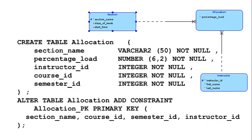Now we look at allocation — the allocation of an instructor to a section. Allocation has one attribute of its own plus attributes that come in through one-to-many relationships. Those migrated attributes form the whole primary key of section: course ID, section name, semester ID. Additionally, instructor ID comes in from the instructor, so you also see instructor ID.